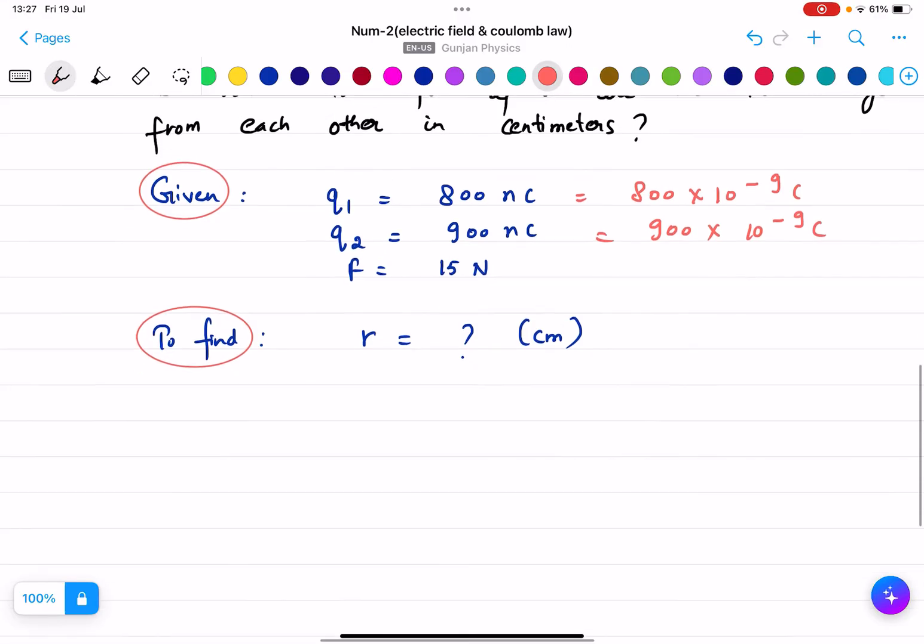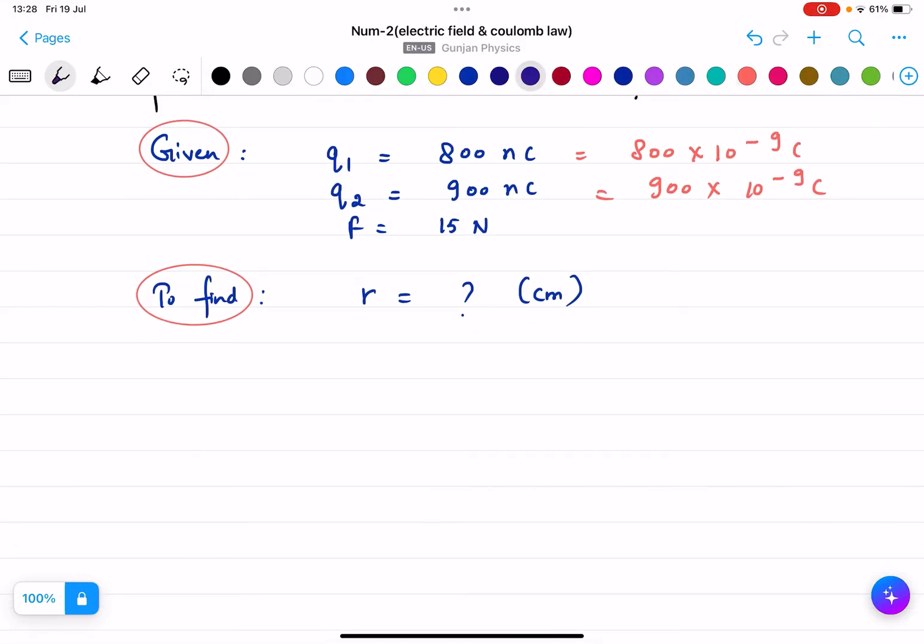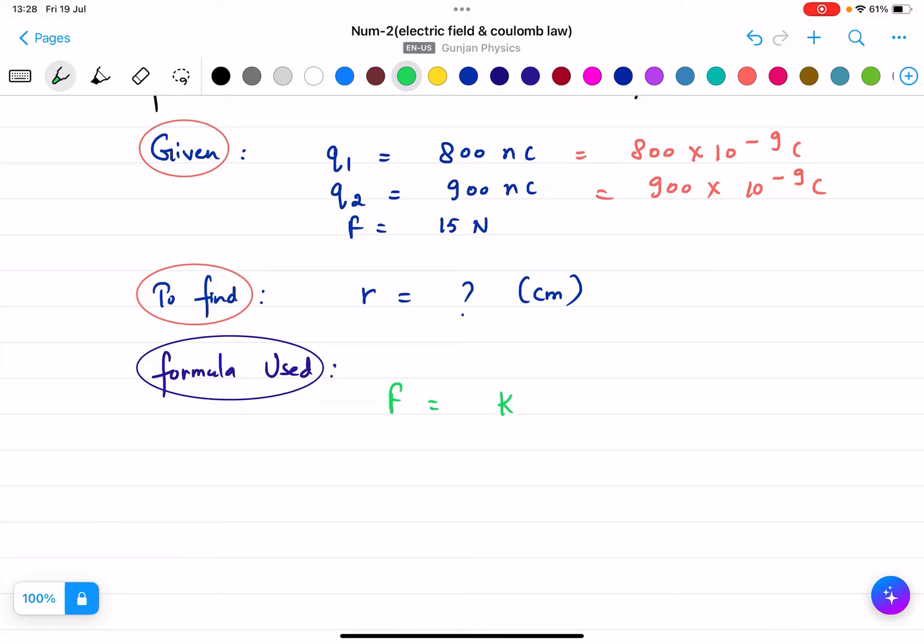15 newtons we will just write it like this. So what will be the formula used? You all know the formula. The formula is F equals to K Q1 Q2 by R square.